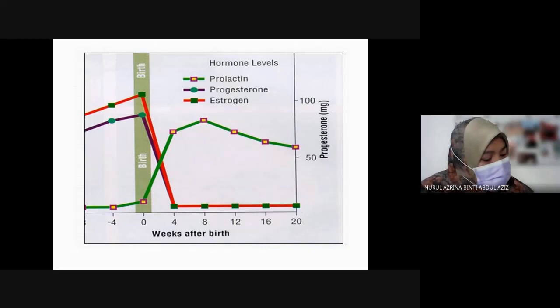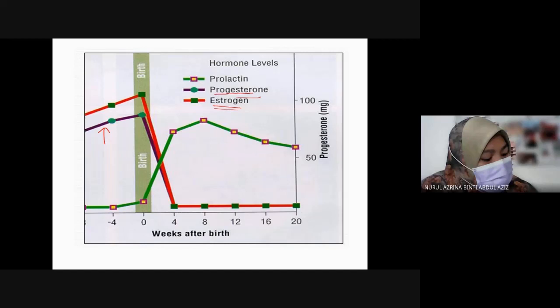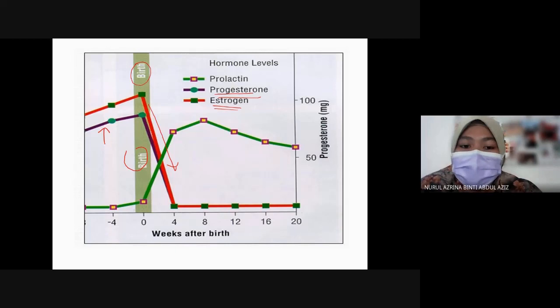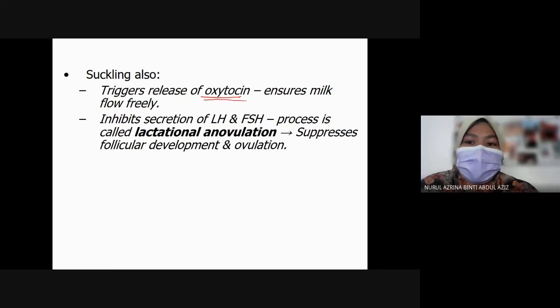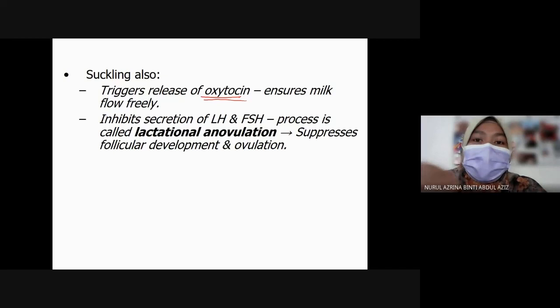You can see from this picture: at the end of pregnancy, there is a high level of estrogen and progesterone. After birth, the level of both estrogen and progesterone drops significantly, inducing an increase of prolactin secretion. Suckling also triggers the release of oxytocin, which induces milk to flow freely, ensuring that milk can flow every time the baby suckles.